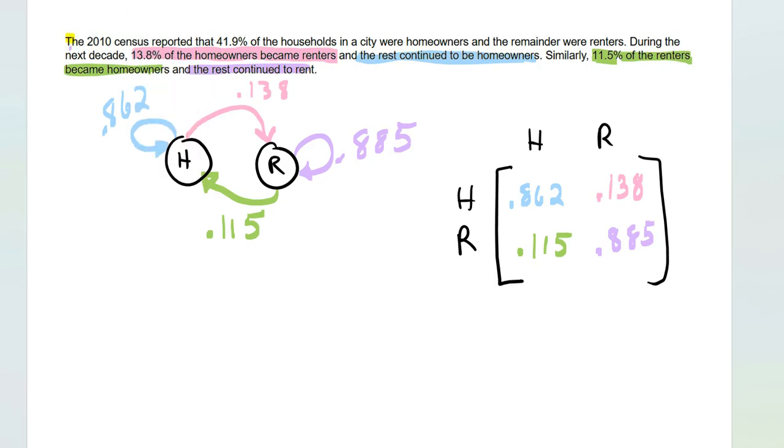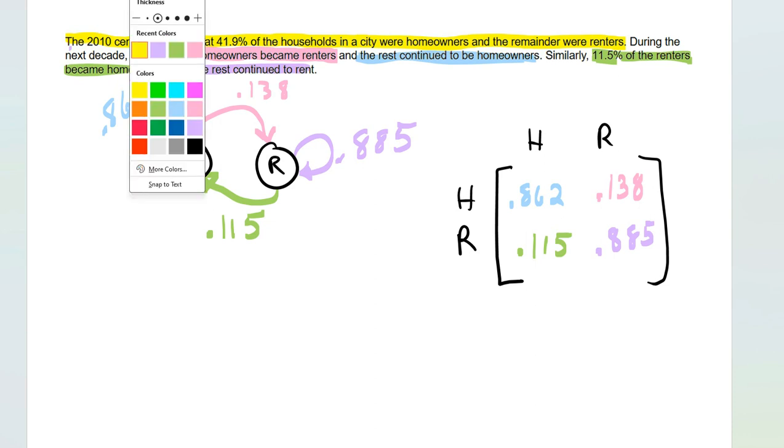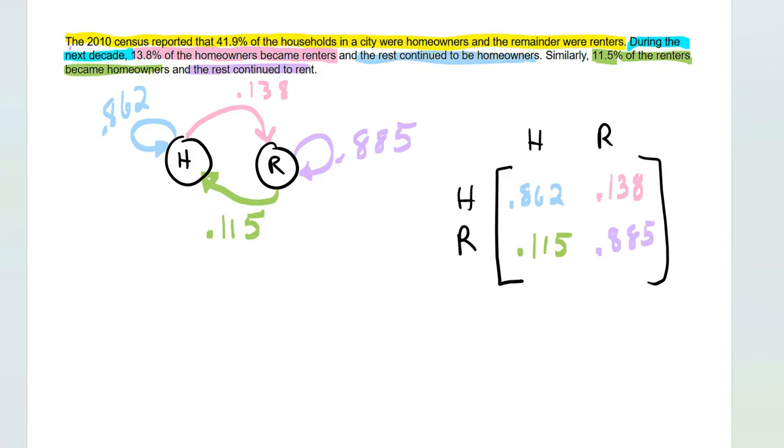In 2010, the census reported that 41% of the household in the city were homeowners, and the remainders were renters. And then it goes on to say that during the next decade, that would be 2020. So, we have an initial state matrix from 2010 that says 41% of the households in the city were homeowners, and the rest were renters. So, 0.419 goes right there, and then take 1 minus 0.419, and that gives you 0.581.